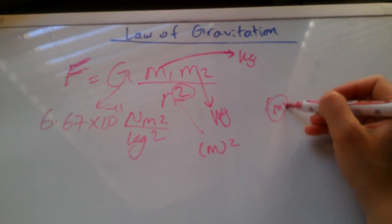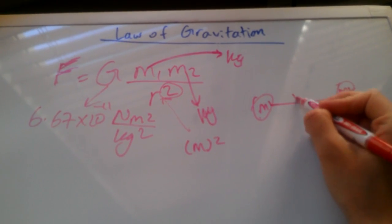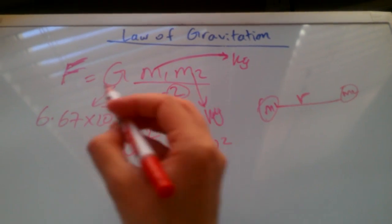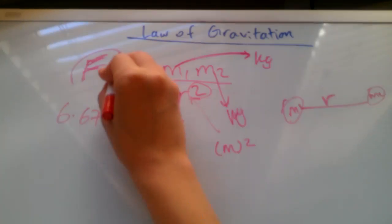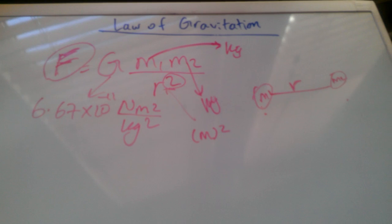So if this is one of our masses, the other is this one, and they are r meters apart from one another, the gravitational force between the two masses is given by this formula.